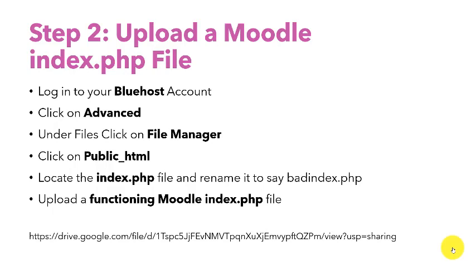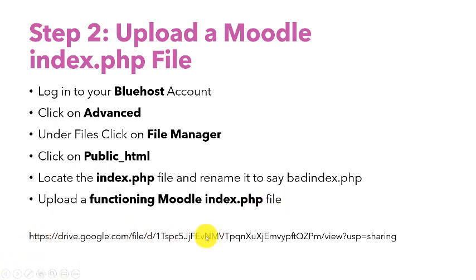To get back your Moodle site, follow these steps: first, log in to your Bluehost account, then click on Advanced. Under Files, click on File Manager, then click on public_html. Locate the index.php file and rename it to something like badindex.php. Then upload a functioning Moodle index.php file and you'll be good to go. You can get this file by downloading a version of Moodle, extracting it, and grabbing the index.php file. I have also uploaded one to a Google Drive — the URL can be found in the description.